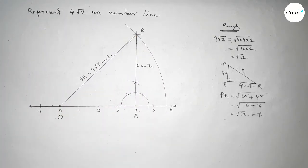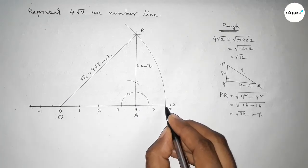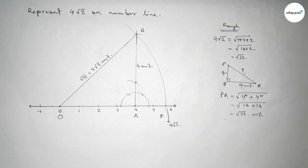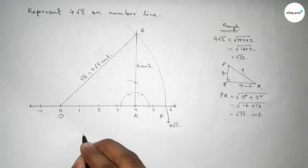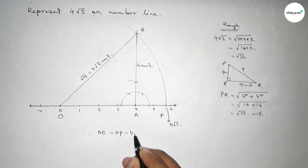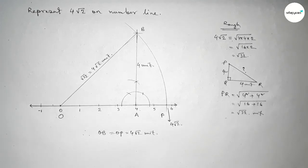And which made the number line at a point, so this is taking here point P and this is 4 root 2 on number line. So therefore distance OB and OP equal to 4 root 2 unit. So that's all, thanks for watching. If this video is helpful to you, then please share it with your friends.